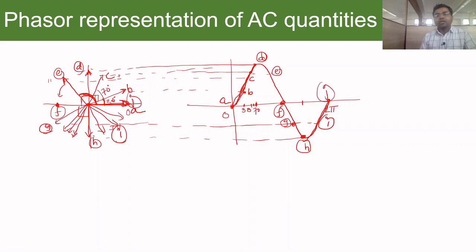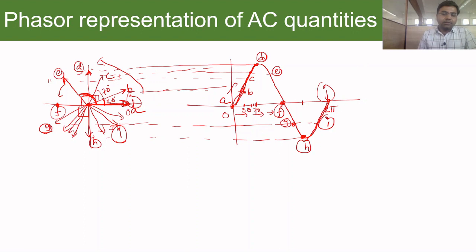As the phasor completes its rotation, the degree increases and the amplitude changes based on its projection. At 90 degrees we get the positive peak, and the phasor continues in a sinusoidal manner, reaching the negative peak and returning to 360 degrees to complete the cycle.